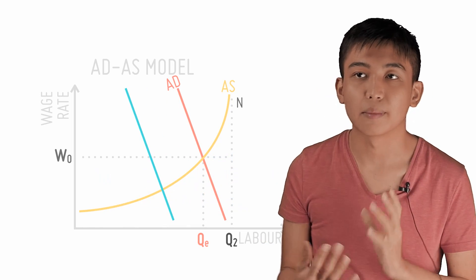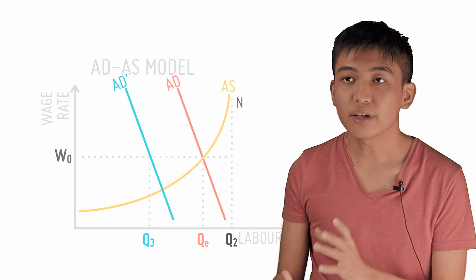However, let's say there is a fall in demand for labour due to a recession. The aggregate demand for labour falls.